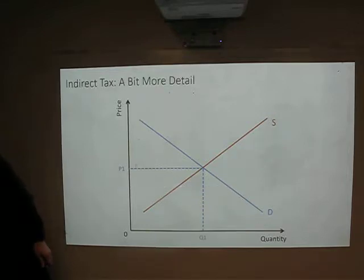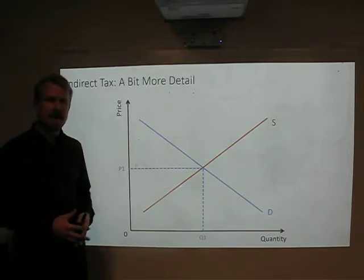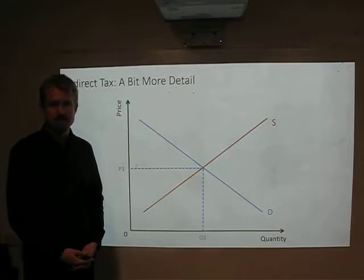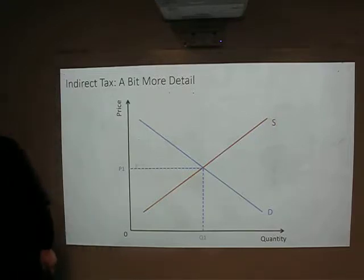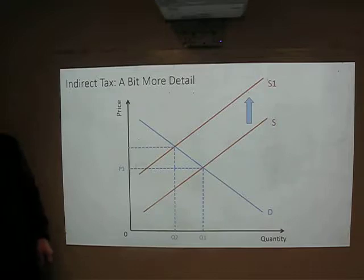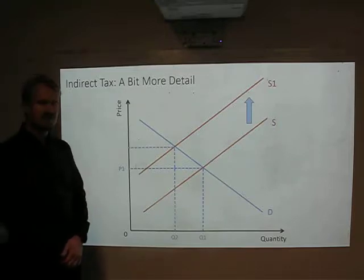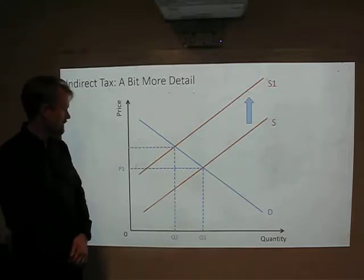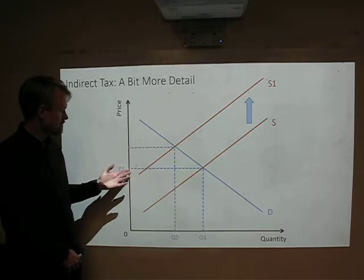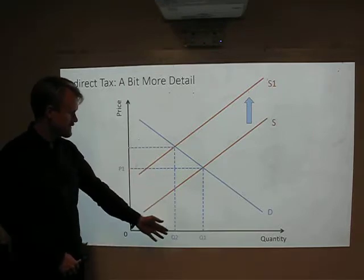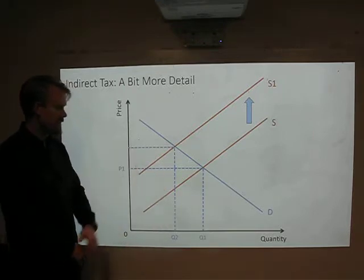So now what we're going to do is we're going to go into a bit more detail about who's actually paying for this tax when it's imposed on the market. So to begin with, let's have a look at that if we say we have a tax again. So we've shifted the supply curve up and we now can see that the old equilibrium price and quantity is going to change. We've got a new quantity and a new higher price.